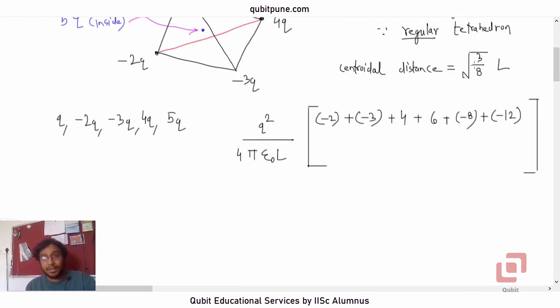Now, let us look at this centroidal distance which is root three by eight L. Even if you do not know it, that is fine and it is in the denominator. So, let us write it as root of eight upon three. Now, let us take the product of each of these charges with 5Q. So, one into five will be five. Negative two into five will be negative 10. Negative three into five will be negative 15 and four into five will be positive 20.